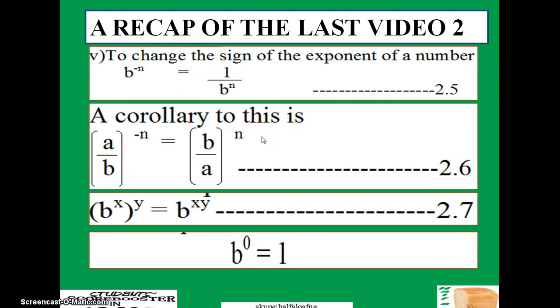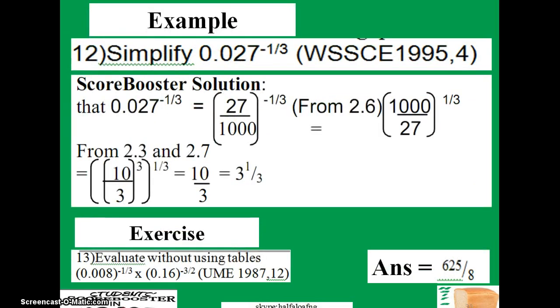Today we're going to look at more examples from exams. The first one is: simplify 0.027 raised to power minus 1/3. This is a WSSCE question from 1995. The solution goes like this: first, change these decimals into fraction. 0.027 is the same as 27/1000.